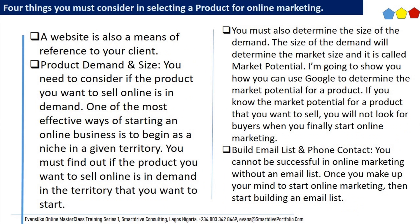Thing 3: Product demand and size. You need to consider if the product you want to sell online is in demand. One of the most effective ways of starting an online business is to begin as a niche in a given territory. You must find out if the product you want to sell online is in demand in the territory where you want to start. You must also determine the size of the demand — the size of the demand will determine the market size, and it is called market potential. I'm going to show you how you can use Google to determine the market potential for a product. If you know the market potential, you will not struggle to find buyers when you finally start online marketing.